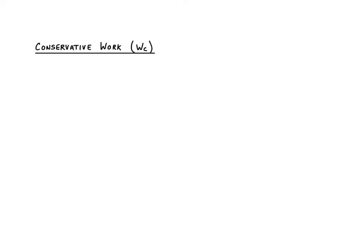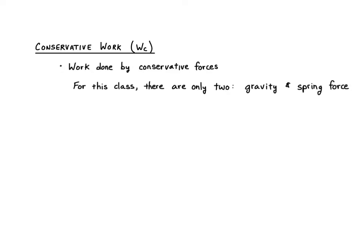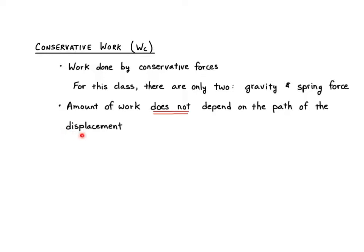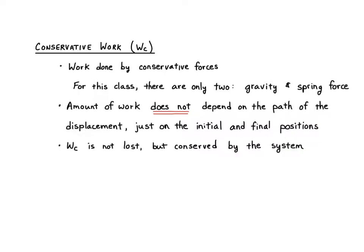Conservative work, on the other hand, is not lost by the system. It is work done by conservative forces. For this class, there are only two conservative forces: gravity and the spring force. The other key property of conservative forces is that the work does not depend on the path of the displacement, but only on the initial and final positions.